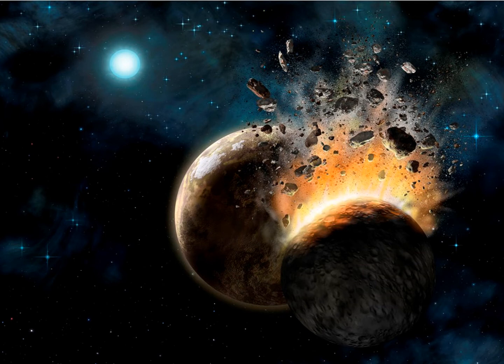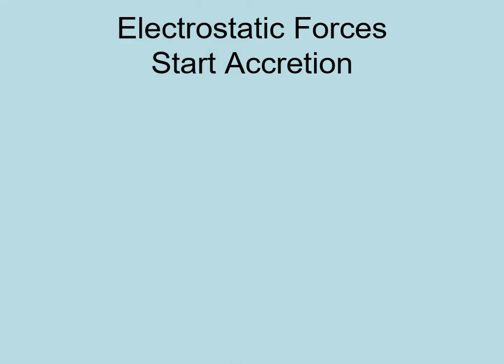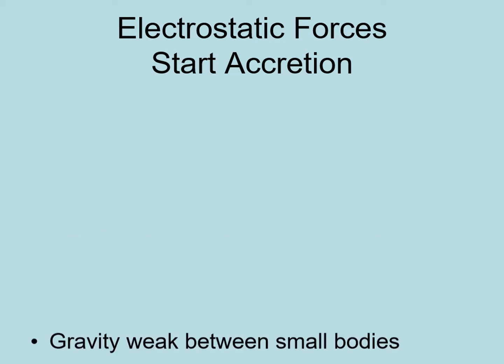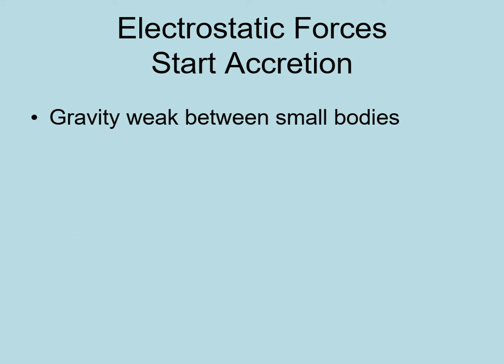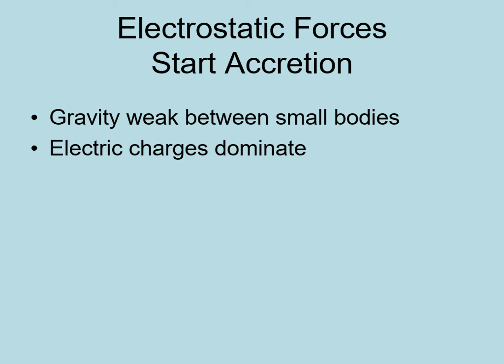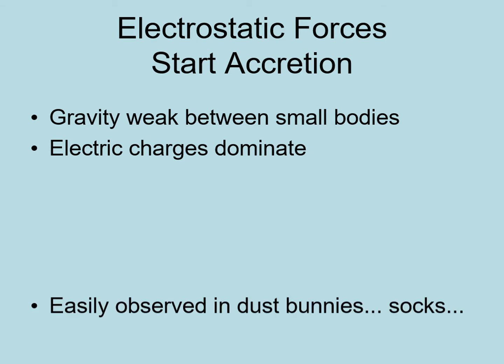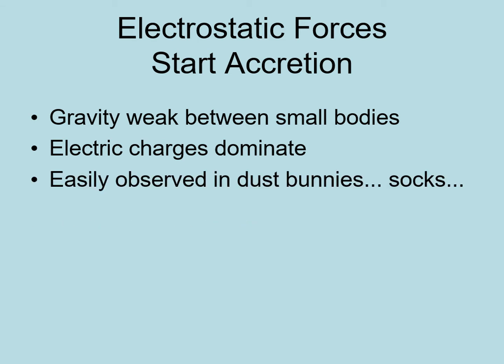This painting shows what a collision between two protoplanets might have looked like. At the start of the accretion process, gravity between solid particles is too weak to play a role in pulling them together. Instead, electric charges are the key to holding things together. That's why we referred to dust bunnies in the last slide. The same sort of electrostatic forces that make dust grains or even socks from the dryer stick together are also responsible for holding dust grains together in the disk.